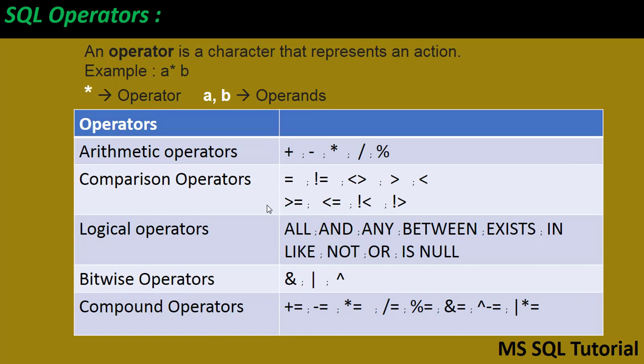Arithmetic operators include: plus (addition), minus (subtraction), star (multiplication), slash (division), and modulo. These are all the arithmetic operator symbols we are going to use.